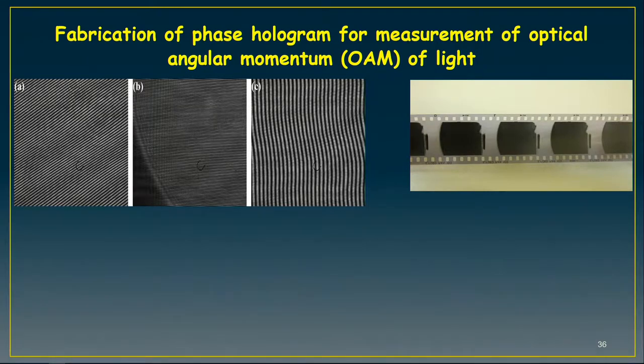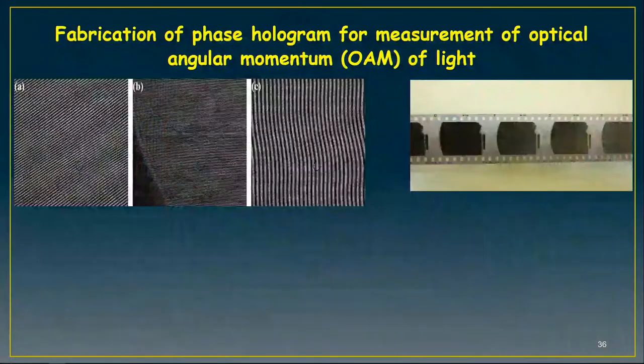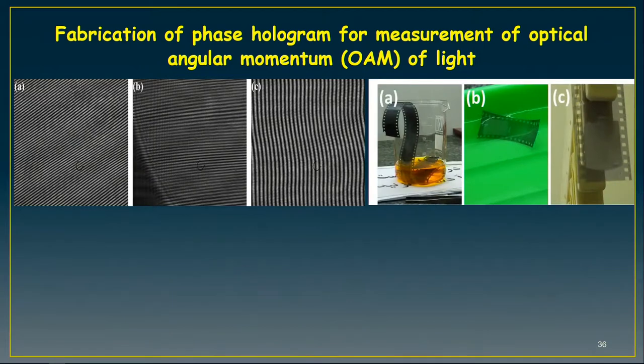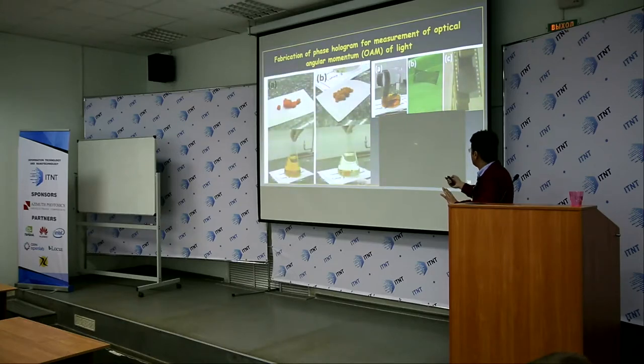In our country, 20 years ago, our desire was to have a Zenit camera — the Russian Zenit camera. I bought the Zenit camera and using that camera, nowadays I fabricate some analog holograms. For example, by taking some pictures from the screen of the computer, we can develop some gratings — blaze gratings, Fresnel gratings — and then we can fabricate both amplitude and phase holograms. Using these holograms, we can produce structured lights.